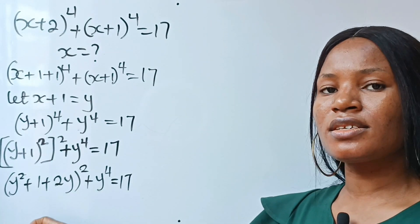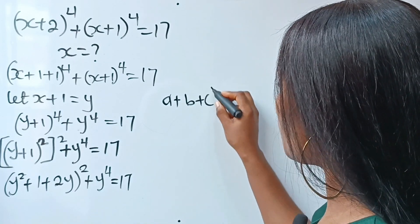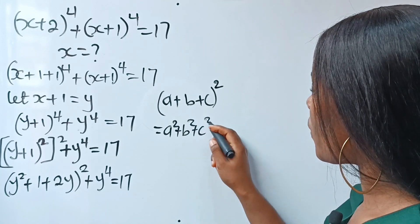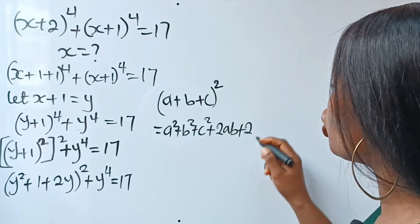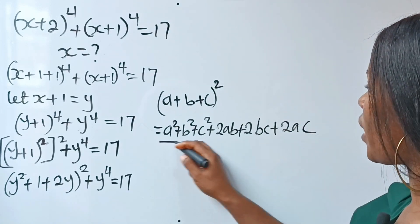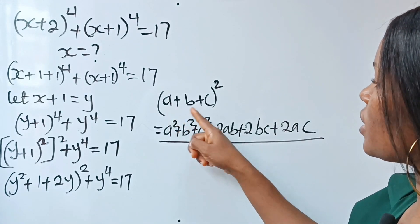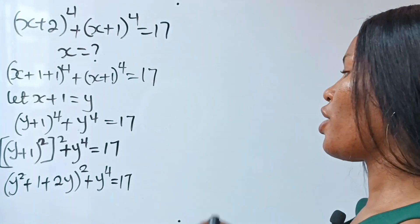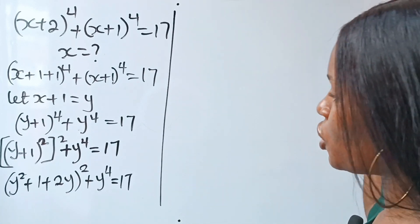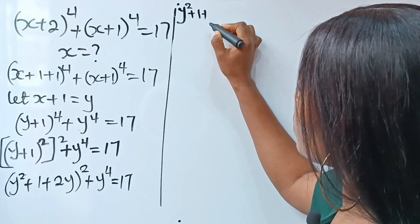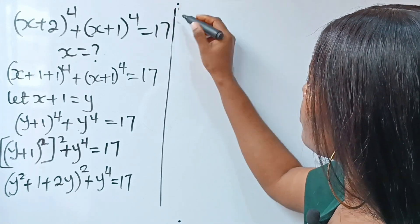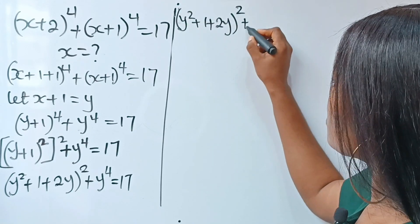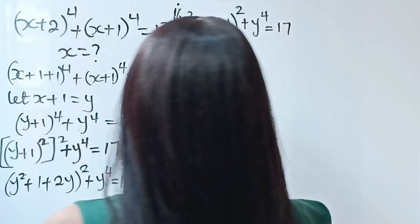We now apply another identity: a plus b plus c raised to the power of 2 equals a squared plus b squared plus c squared plus 2ab plus 2bc plus 2ac. We'll relate our expression y squared plus 1 plus 2y, all squared, plus y to the power of 4 equals 17 in this form.